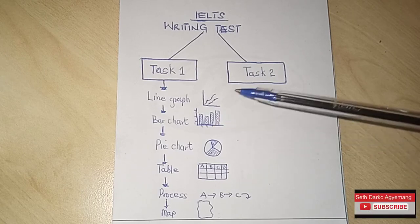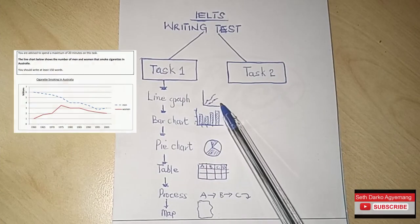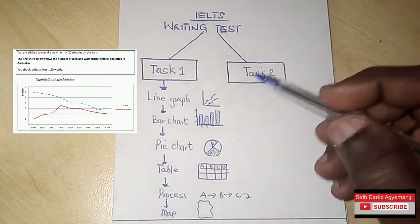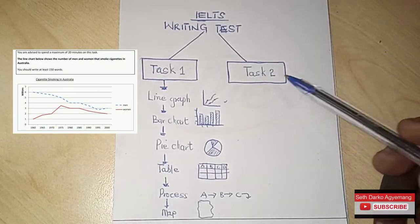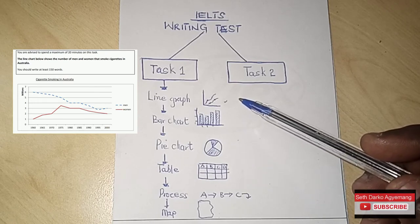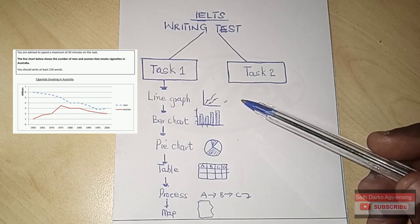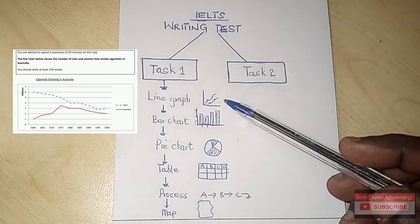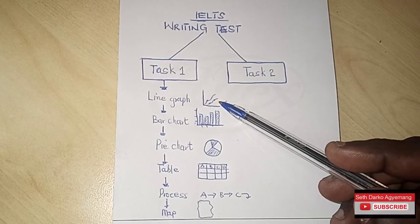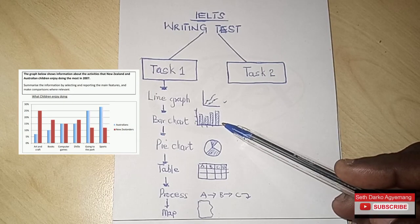For the line graph, as you can see in the illustration here, you'll be given a graph containing lines and asked to write a description of it — talking about the highest and lowest points, where there's an increment and where there is a decrease. There are a lot of things to observe on the line graph to write about.